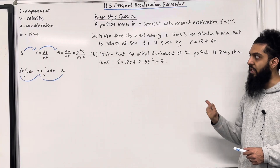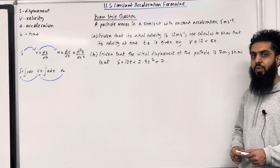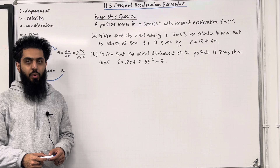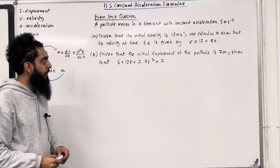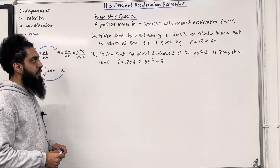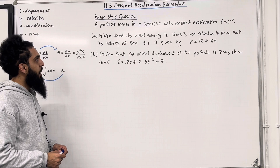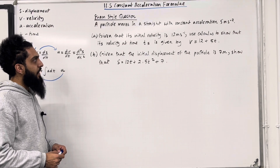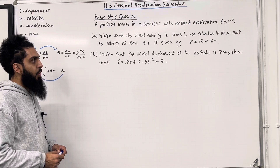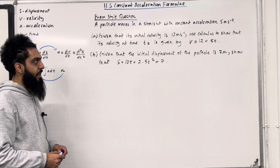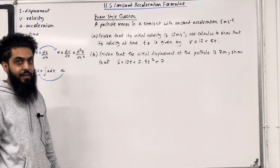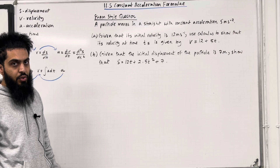I'll be implementing these key facts within this exam style question. Let's have a look at it. A particle moves in a straight line with constant acceleration 5 meters per second per second. Part A: given that its initial velocity is 12 meters per second, use calculus to show that its velocity at time t seconds is given by V = 12 + 5t.